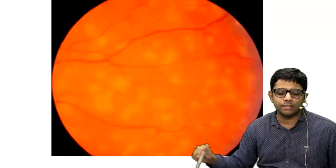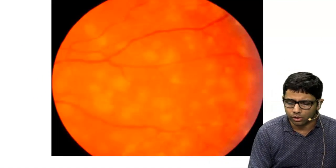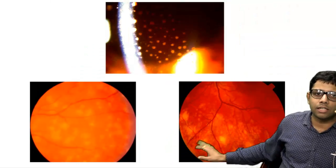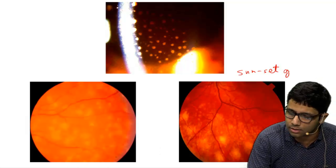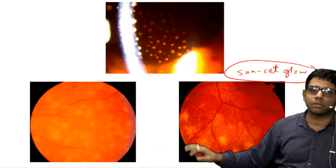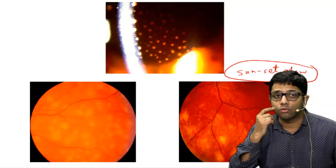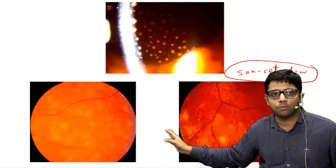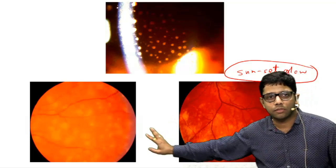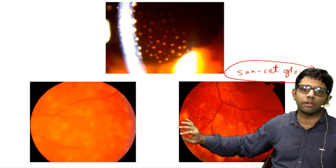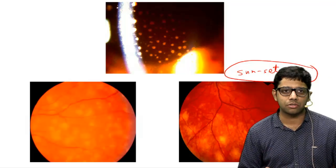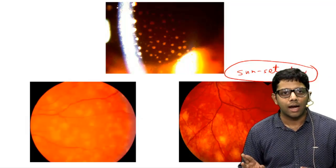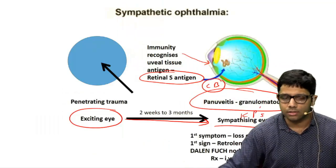The multiple white areas are multiple choroidal infiltrates. When they settle down, the fundus looks like a sunset glow fundus. Sunset glow fundus can be seen in both sympathetic ophthalmia and Vogt-Koyanagi-Harada syndrome. Both are pan uveitis, both are granulomatous, and both can have multiple choroidal infiltrates and sunset glow fundus.